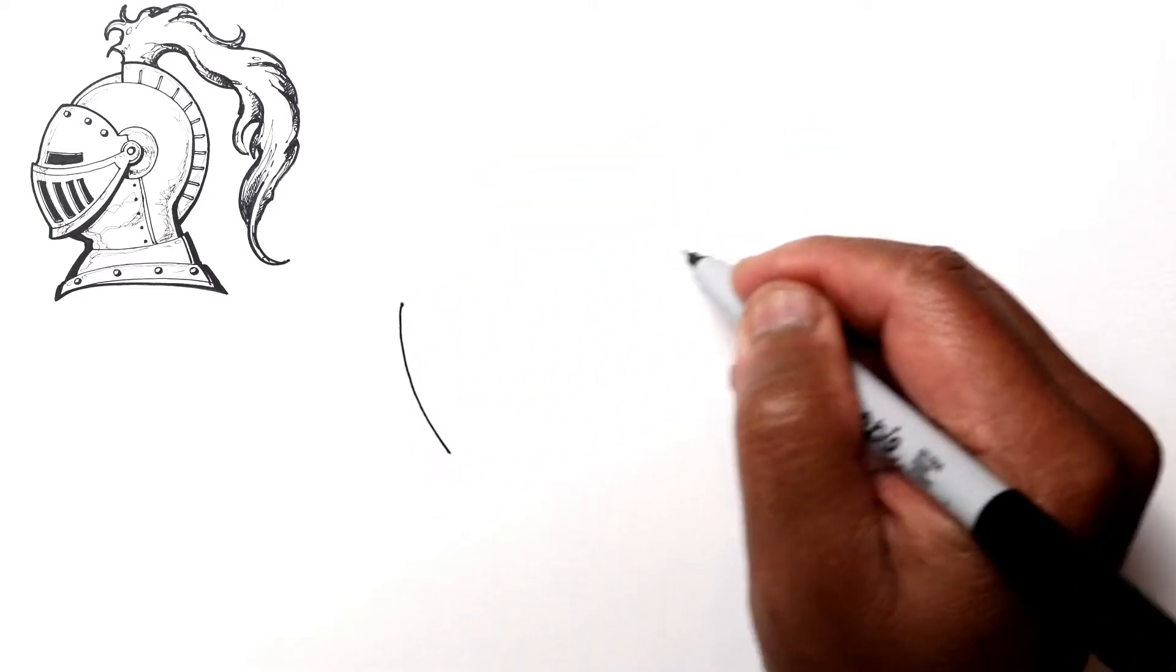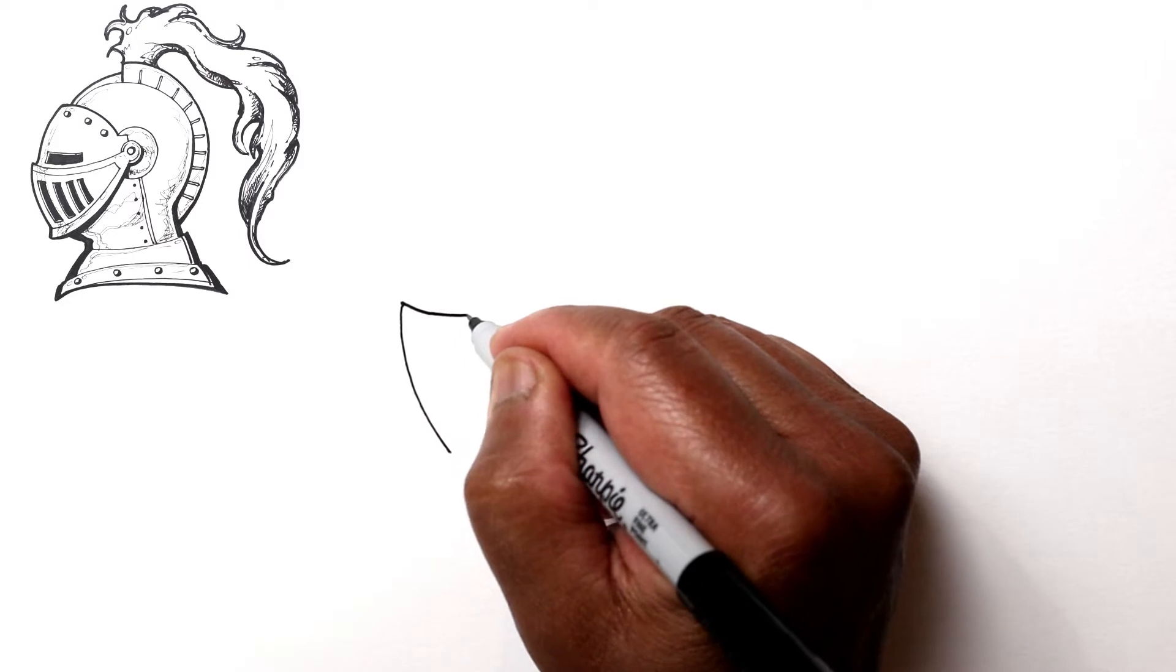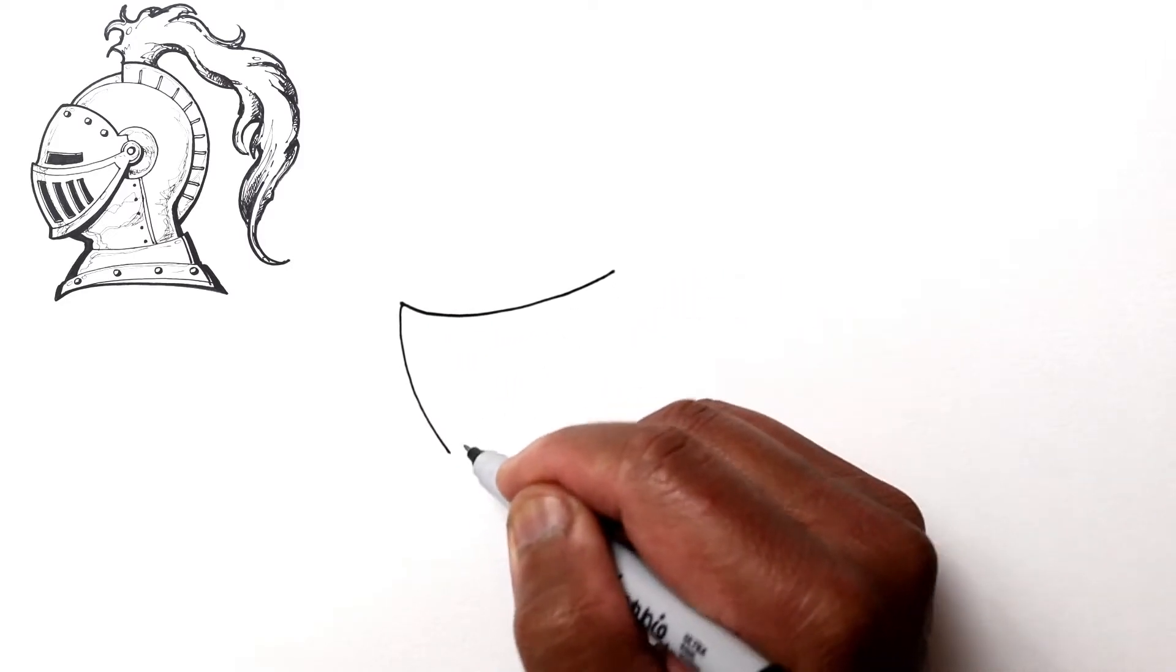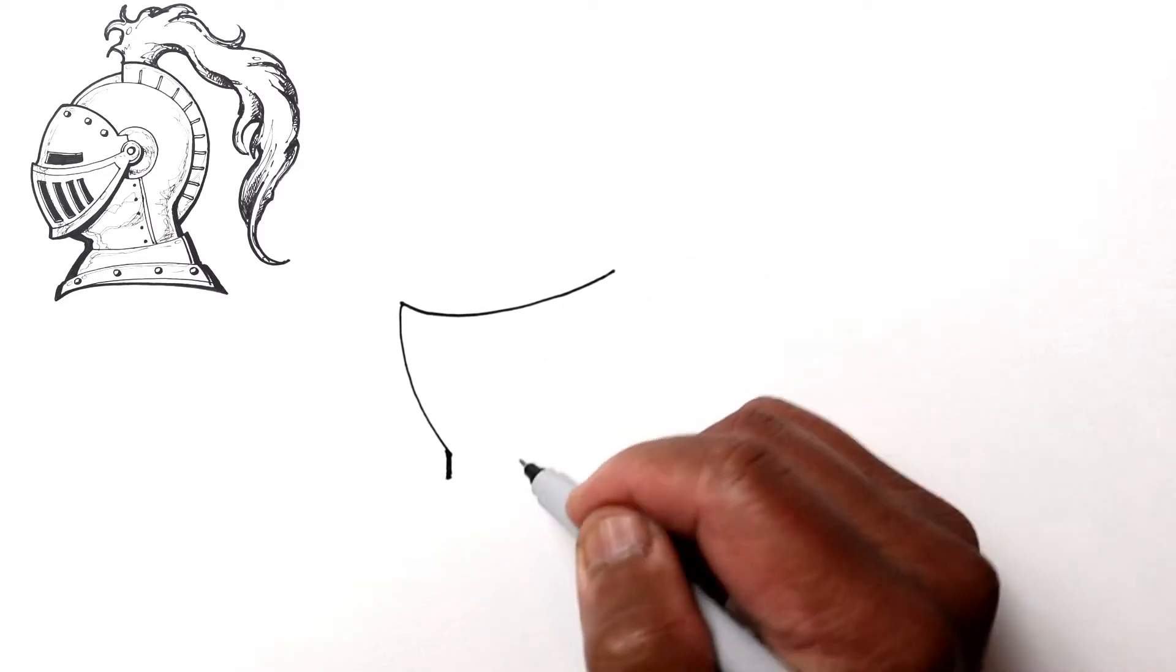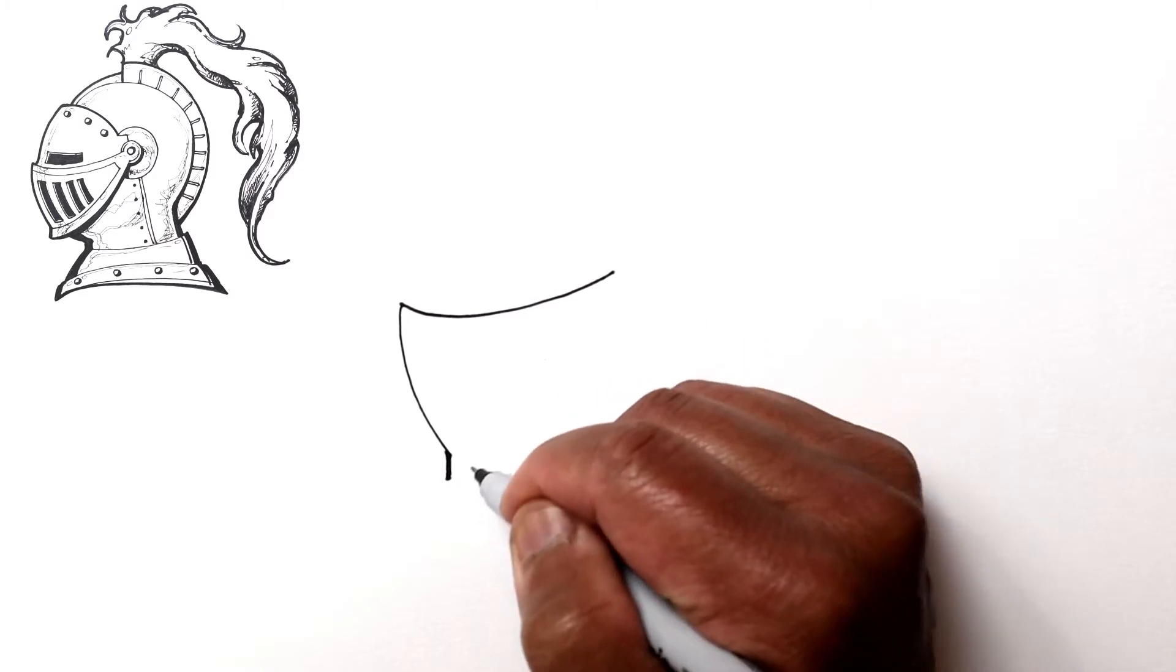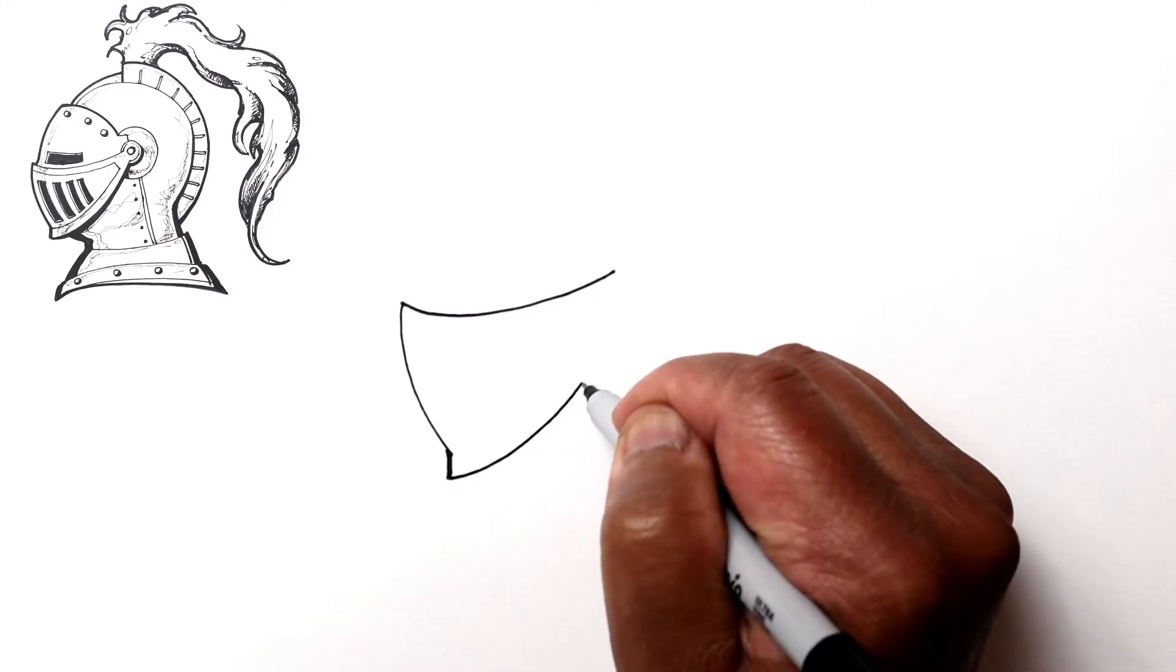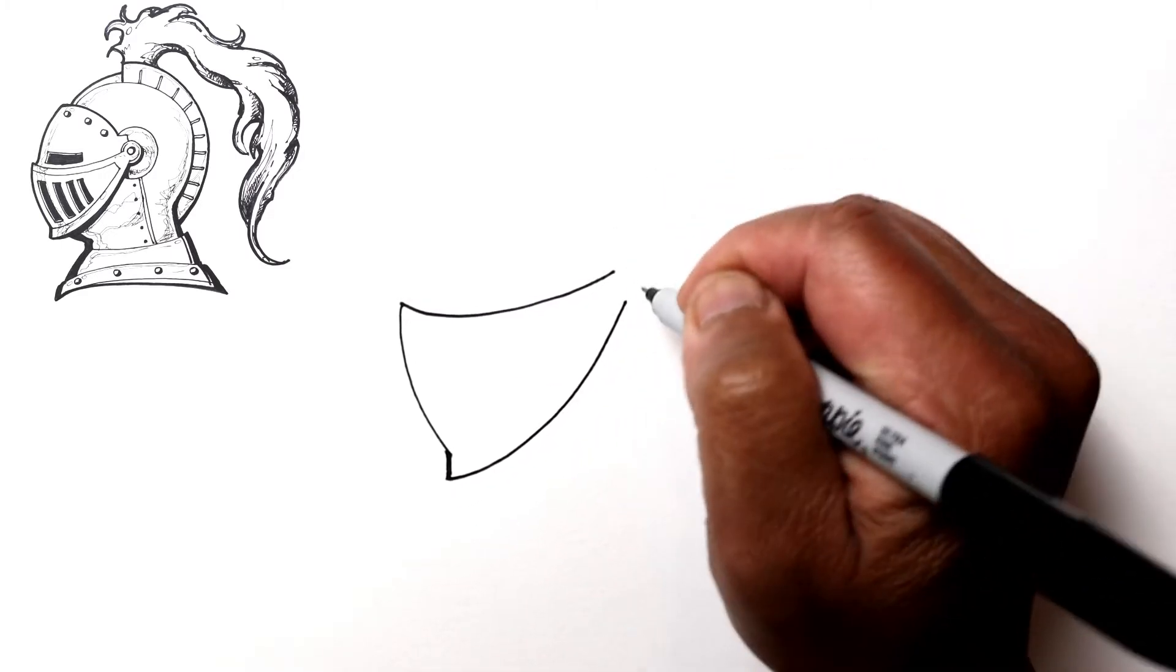It's gonna curve out this way to the side of his head. Let's bring this down a little bit away first this way forward, and then bring this back up close to the other line.